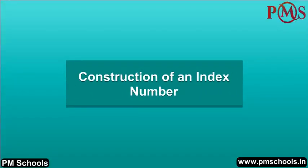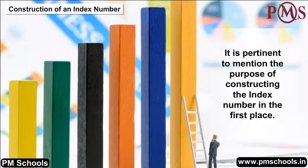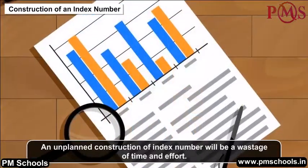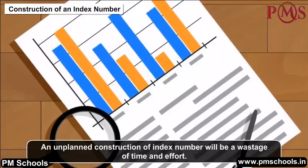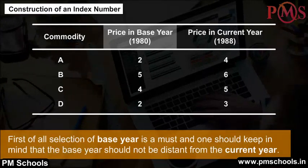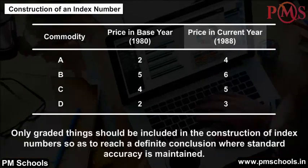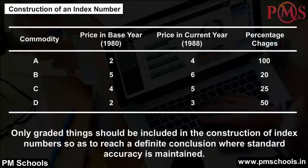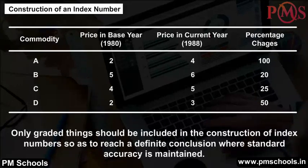Construction of an Index Number. It is pertinent to mention the purpose of constructing the index number in the first place, as an unplanned construction will be a wastage of time and effort. Selection of the base year is a must, and one should keep in mind that the base year should not be distant from the current year. Only graded things should be included so as to reach a definite conclusion where standard accuracy is maintained.